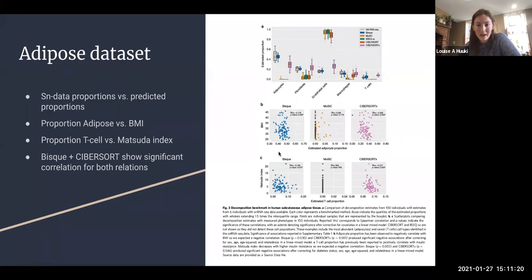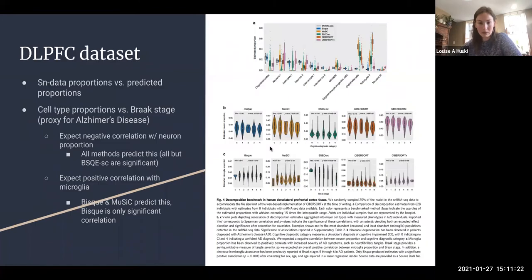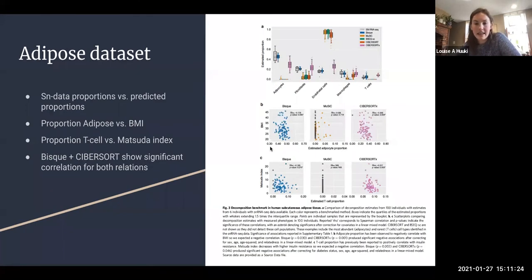We get some nice little scatter plots here and they give us significance. I think that BSeq-sc and CibersortX both failed to predict any of the adipose tissue or the T cells, which is why they're missing from these bottom plots here.